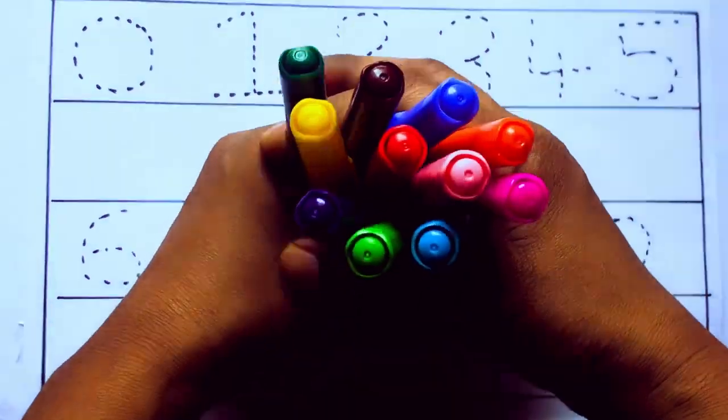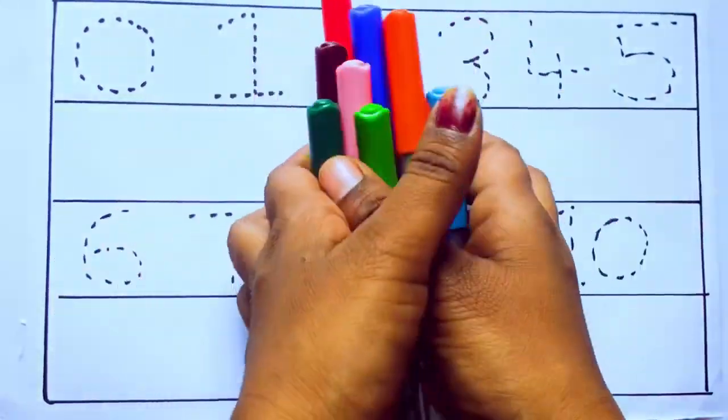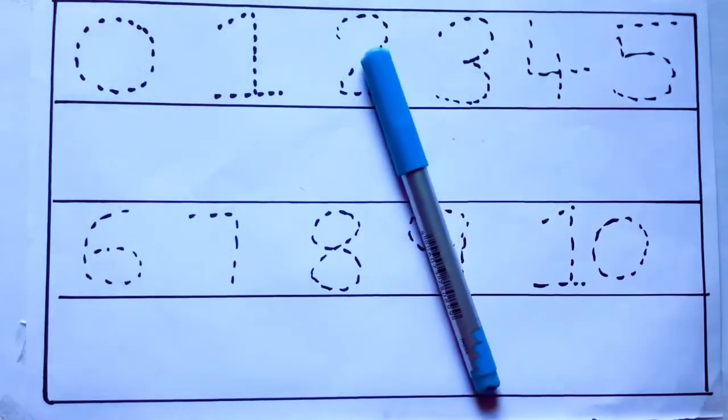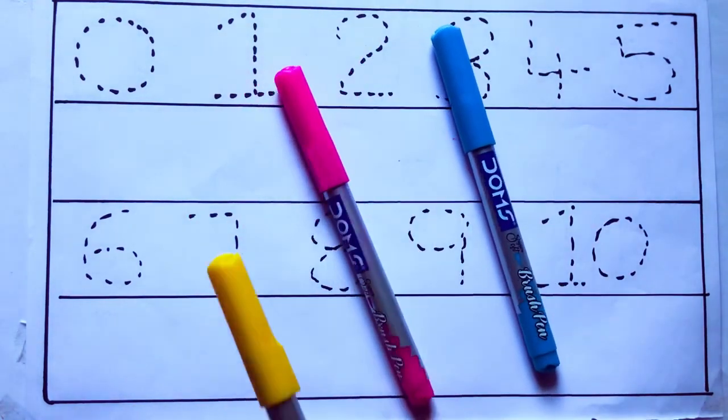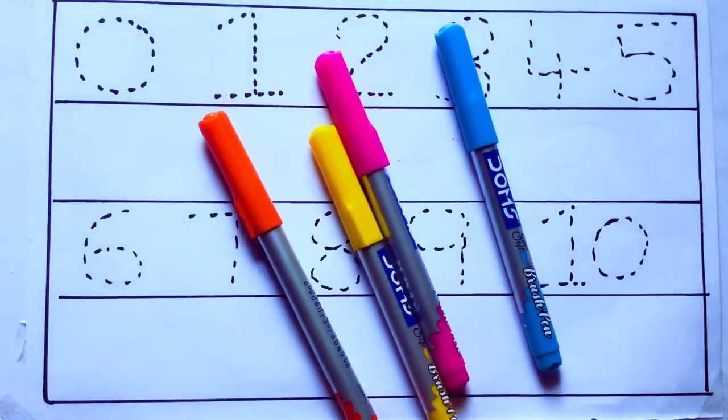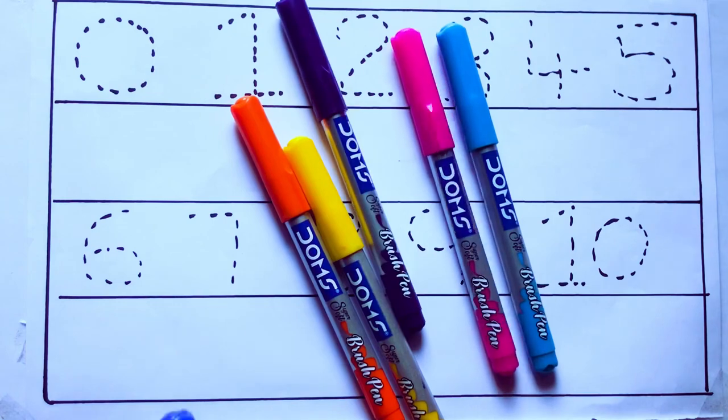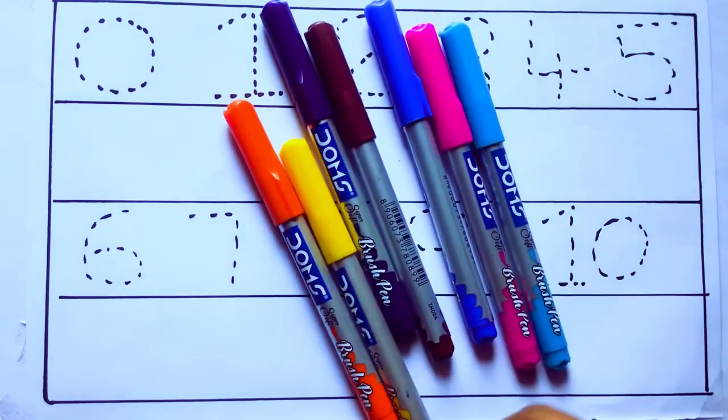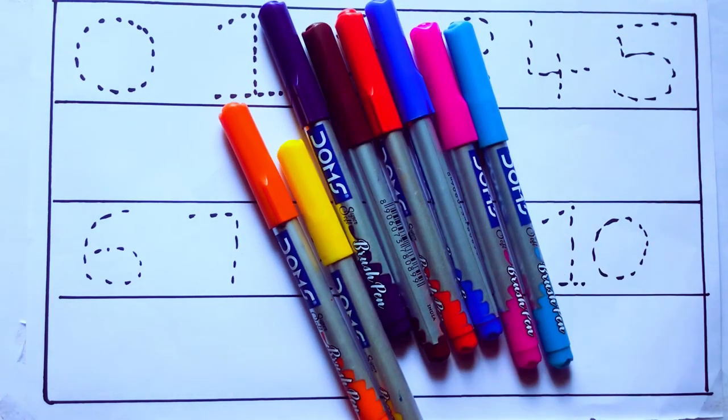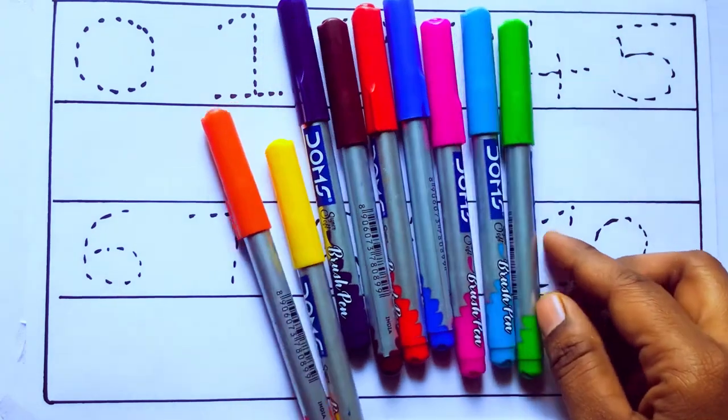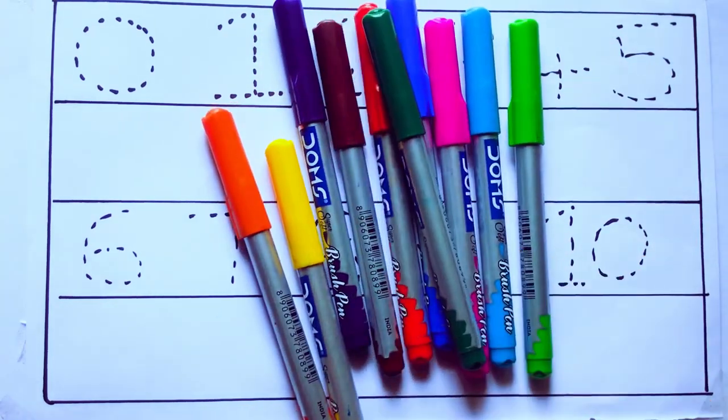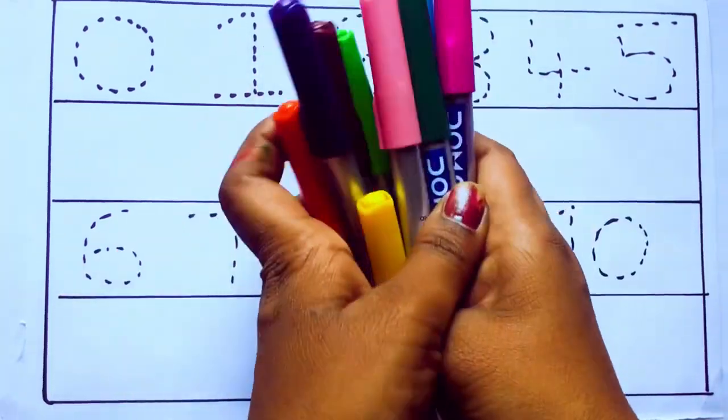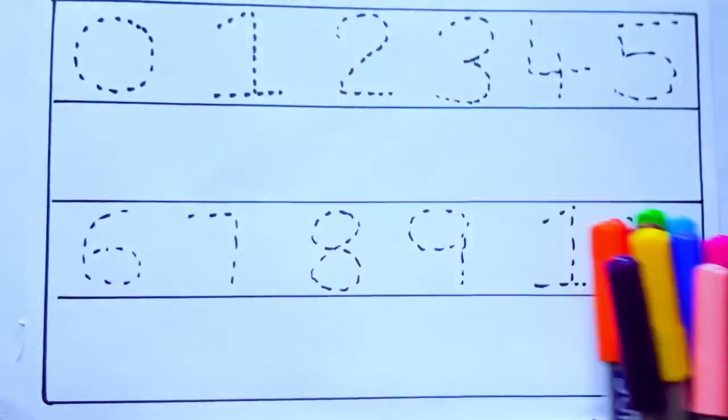Let's learn some colors. These are all the color pencils. Let's learn the names: sky blue color, pink color, yellow color, orange color, violet color, blue color, brown color, red color, green color, and pink color. Let's draw numbers.